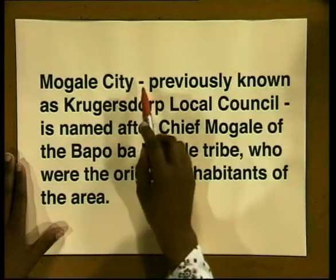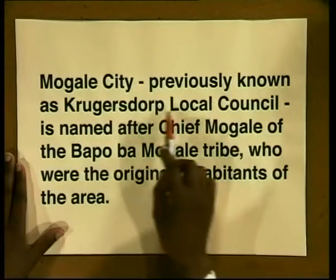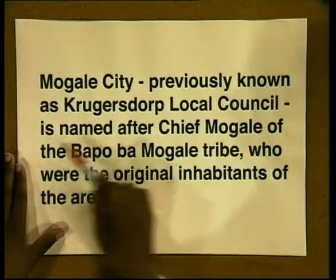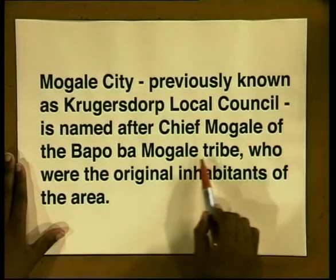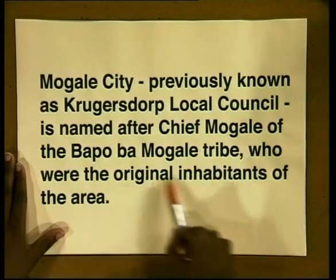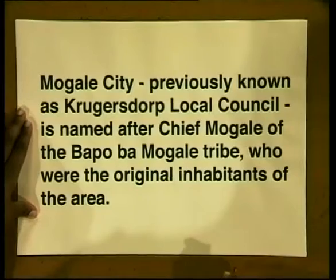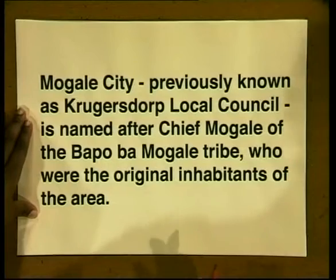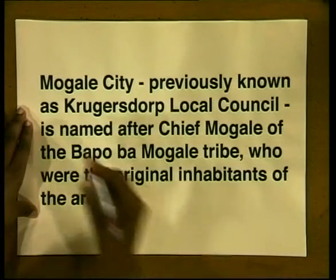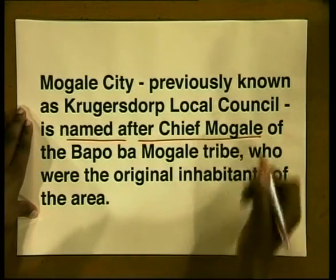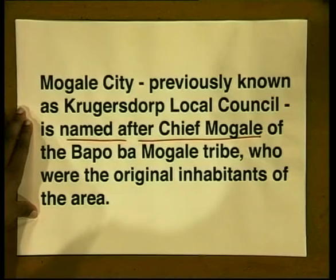Try the same exercise with this final paragraph. Mokhale City, previously known as Krugersdorp Local Council, is named after Chief Mohale of the Bapobamohale Tribe, who were the original inhabitants of the area. See if you can spot the key points. The most important fact is that the city is named after a chief. The details of the original inhabitants are not key issues in this article.